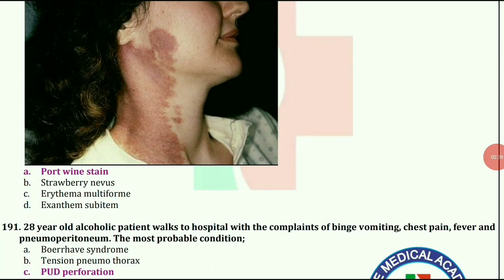28-year-old alcoholic patient walks to hospital with complaints of binge vomiting, chest pain, fever, and pneumoperitoneum. The most probable condition is PUD perforation.